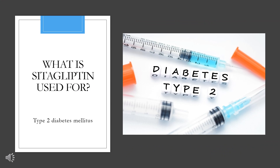What is citagliptin used for? Citagliptin is indicated as an adjunct to diet and exercise to improve glycemic control in adults with type 2 diabetes mellitus. It is not used to treat type 1 diabetes or patients with a history of pancreatitis. It is also used in combination with metformin or ertugliflozin.